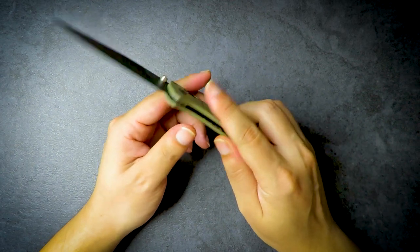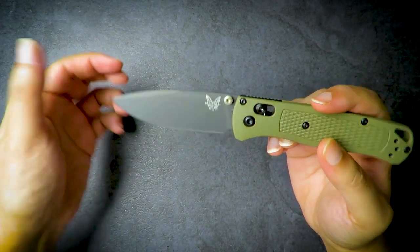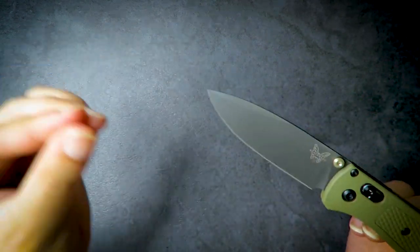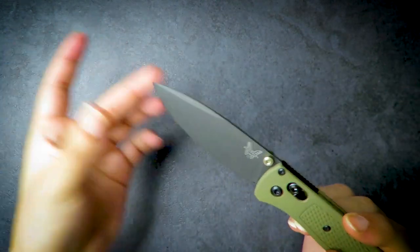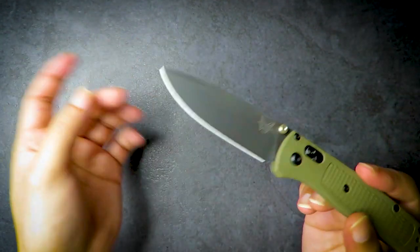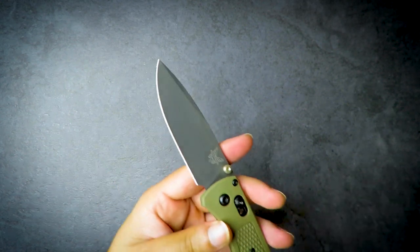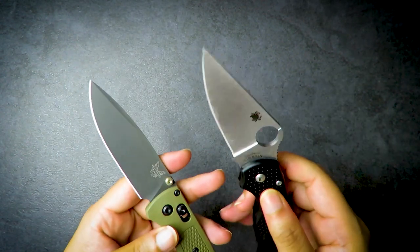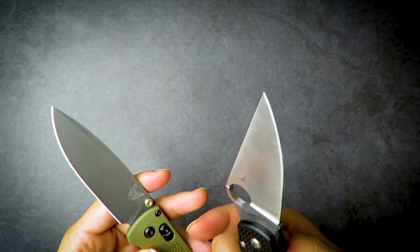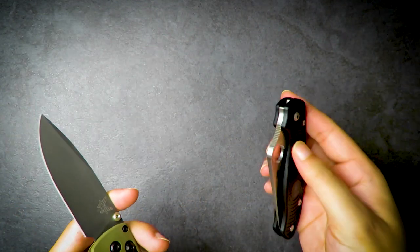The blade itself is very nice. I like this little swedge up here. The blade looks a little bit dirty, there's some dust on it from the factory or the bag. The grind actually looks really good. Some knives, even my Para 3 here, the grind is a little bit uneven.